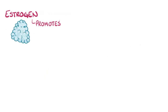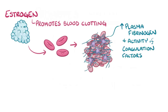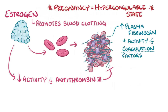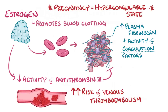Estrogen also promotes blood clotting by increasing plasma fibrinogen and the activity of coagulation factors, as well as enhancing platelet aggregation, all of which normally promote coagulation. At the same time, estrogen decreases the activity of antithrombin 3, which normally inhibits coagulation. Therefore, pregnancy is a hypercoagulable state, and it makes sense for it to be this way so there will be as little bleeding after delivery as possible. However, this also means pregnant females have a greater risk of developing a venous thromboembolism — a blood clot blocking off a vein — especially in the lower legs where there's already venous stasis.